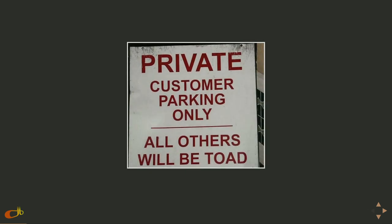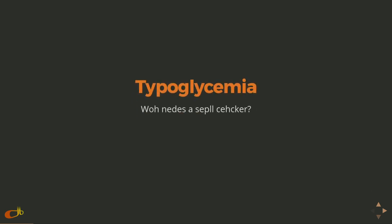Let's start with a story. There's a picture of a sign that says 'private customer parking only, all others will be towed' — but the word 'towed' is spelled like the frog, not T-O-W-E-D. Humans are pretty forgiving; we know it's either a joke or a typo. There's an urban legend called typoglycemia: if you scramble the letters in the middle of any word, you can still understand it. So to humans, spelling isn't required for comprehension — but for computers, it is. They're not so forgiving.